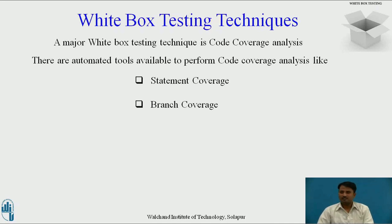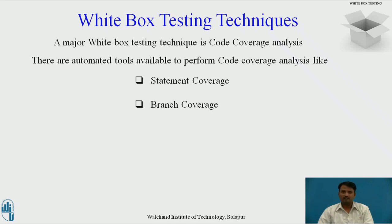White box testing techniques: the major technique is code coverage analysis, with automated tools available such as statement coverage, which requires every possible statement in the code to be tested at least once. Next is branch coverage, which checks every possible path of a software application — an example tool for C, C++ and Java is TCAT path. There are also numerous coverage types such as condition coverage, multiple condition coverage, path coverage, and functional coverage. Using statement and branch coverage, you generally attain 80-90% code coverage, which is sufficient.